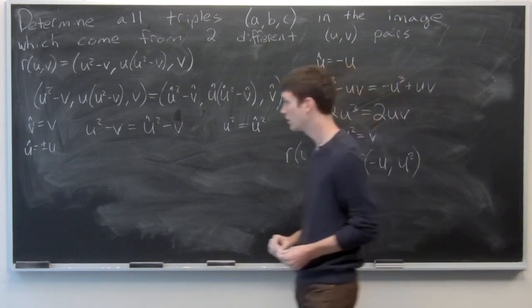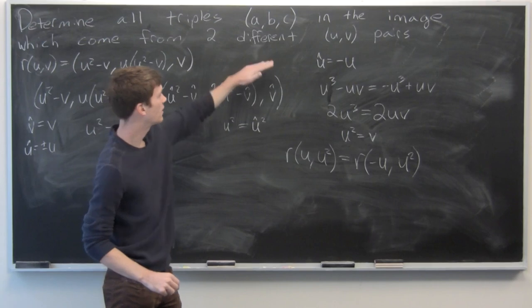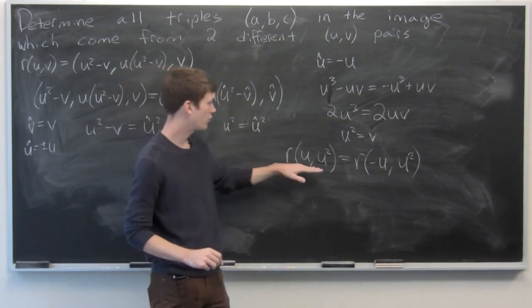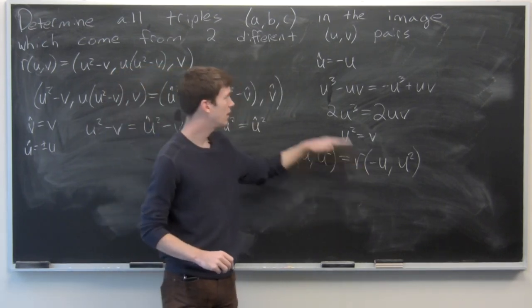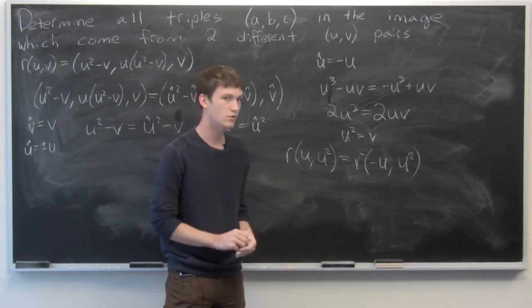So we found points in the image that produce the same point, and they are given as plus or minus u, u-squared.